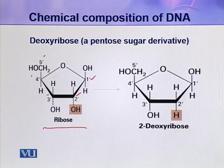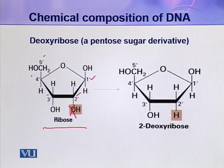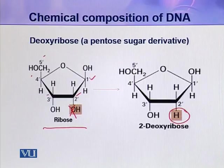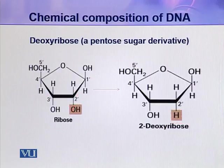If at the 2 prime position one oxygen is removed, ribose sugar becomes deoxyribose. So at the 2 prime position one oxygen is missing, giving us deoxyribose sugar — the first component of a deoxyribonucleotide.